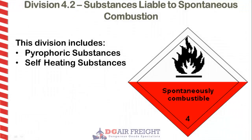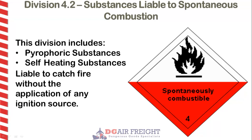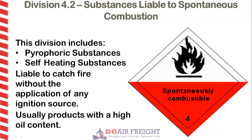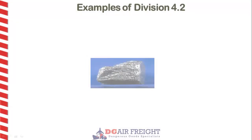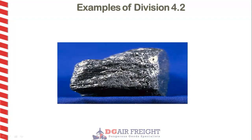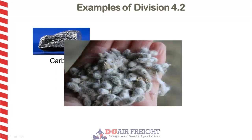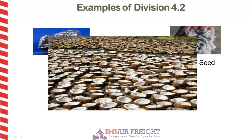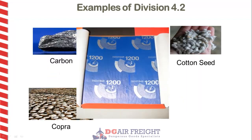Division 4.2 includes pyrophoric substances and self-heating substances. These substances are liable to catch fire without the application of an ignition source and are usually products with a high oil content. Examples of Division 4.2 include carbon, cotton seed, copra — which is the dried meat from coconuts — and also carbon paper.